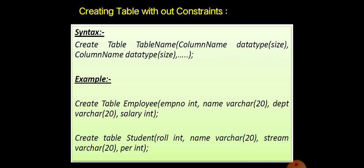While we are giving the column description, we need to open a single parenthesis at the start and close it with a closing parenthesis at the end. Then we have to end all the queries using a semicolon. So the syntax is: CREATE TABLE, table name, column name, data type — and the size we need to put in brackets. Each column has to be separated with a comma.